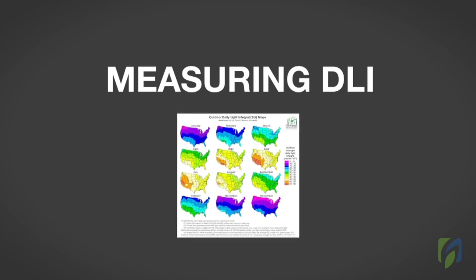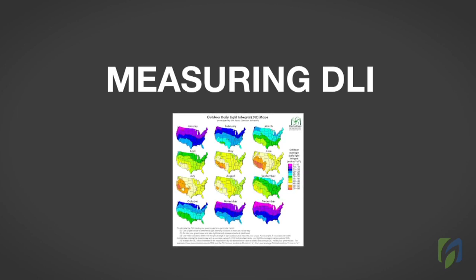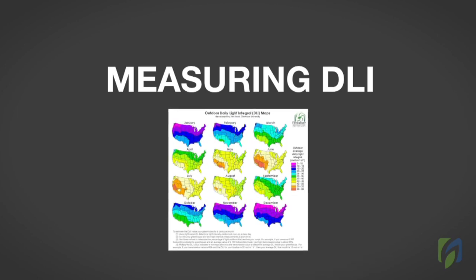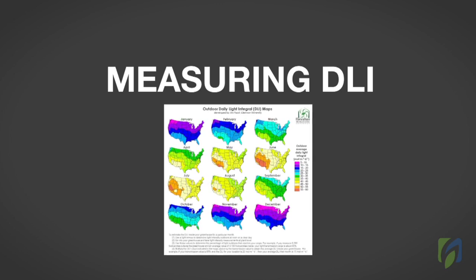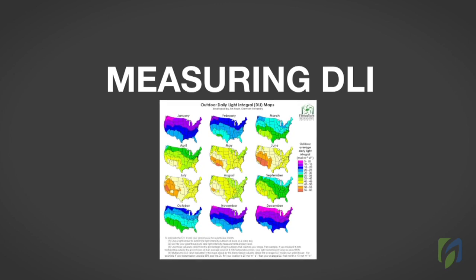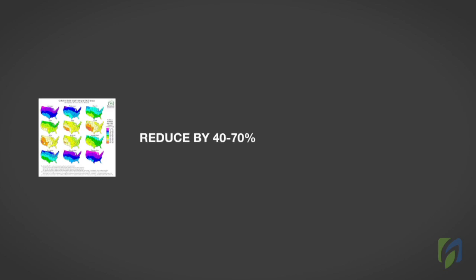Measuring daily light integral. As discussed earlier, you can estimate the outdoor daily light integral levels by locating your operation on the DLI maps developed by researchers at Clemson University. The maps provide the monthly outdoor DLI throughout the United States. Remember that these DLI values should be reduced by 40 to 70% to provide you with a very rough estimate of the DLI values in your greenhouse and received by your crops monthly.